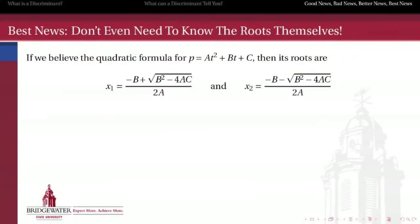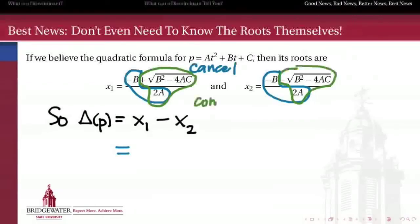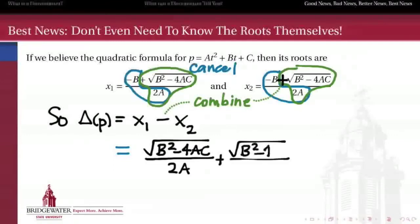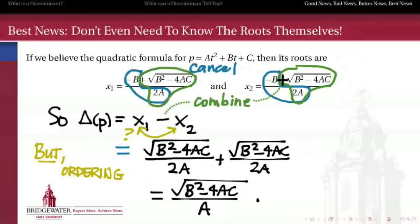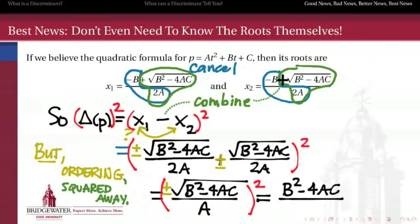Here's the proof of that formula. If we believe the quadratic formula is true, we know exactly what the two roots are. To find the discriminant, we subtract the second root from the first. The minus b over 2a terms cancel, and the remaining pieces are equal and opposite, so subtracting gives twice radical of b squared minus 4ac, over 2a, which simplifies to radical of b squared minus 4ac, divided by a. Because the ordering of x1 and x2 matters, there's a plus or minus. We resolve the issue by squaring, giving us b squared minus 4ac all divided by a squared.